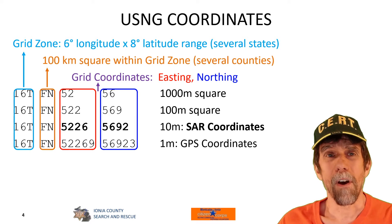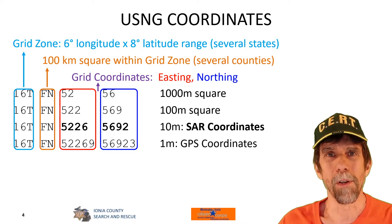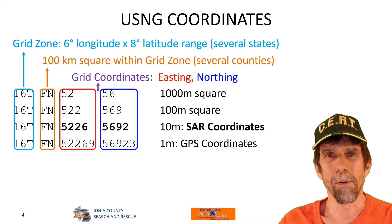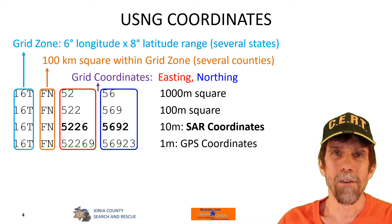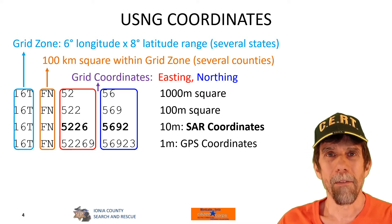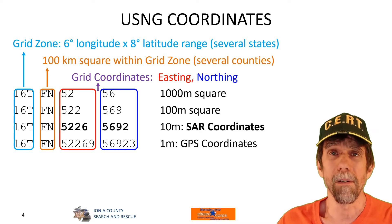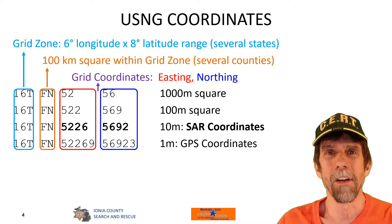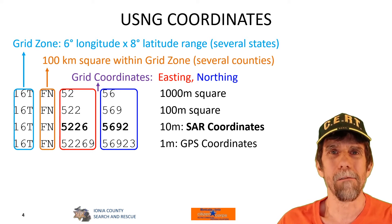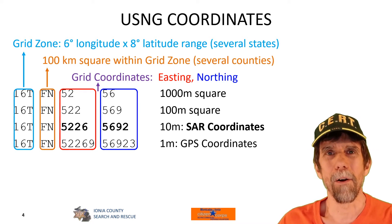In coordinates, often we will drop the grid zone and 100-kilometer square identifier during an operation, because when we're talking to each other we all know generally the area we're in. So if we're relating coordinates to another search team, usually we'll just give the digits — four digits of easting, four digits of northing. That's enough precision for most search and rescue purposes. It gets us within 10 meters, which is a little bit bigger than a two-car garage. And more importantly, that's usually about as accurate as we can get with the devices we have. With a handheld GPS, you're not really going to get a location more accurate than about 10 meters.